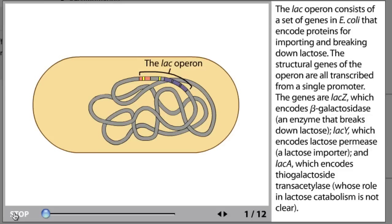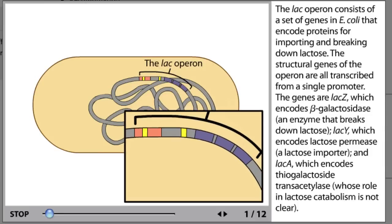The lac operon consists of a set of genes in E. coli that encode proteins for importing and breaking down lactose. The structural genes of the operon are all transcribed from a single promoter.